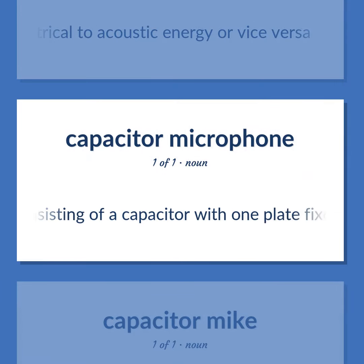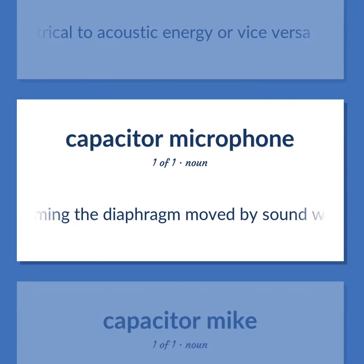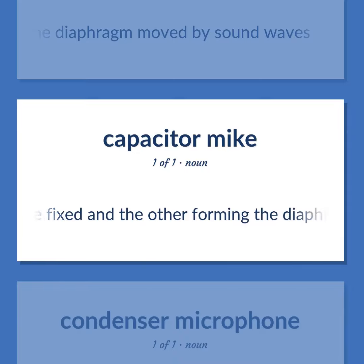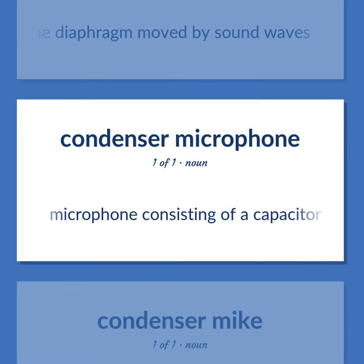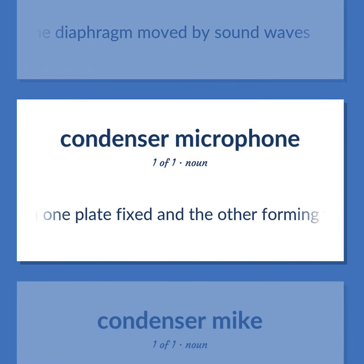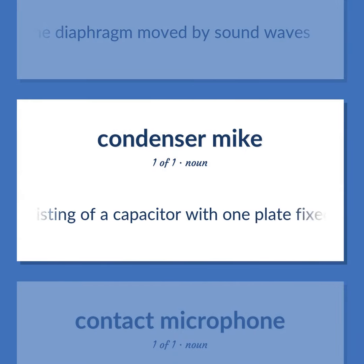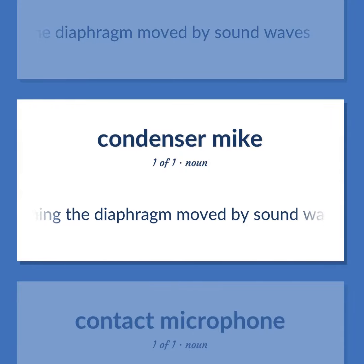Condenser microphone: a microphone consisting of a capacitor with one plate fixed and the other forming the diaphragm, moved by sound waves.